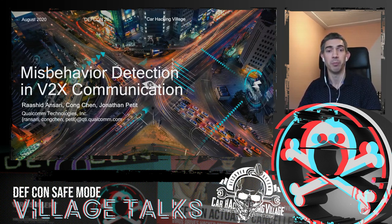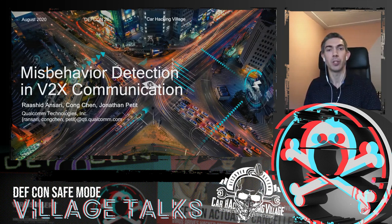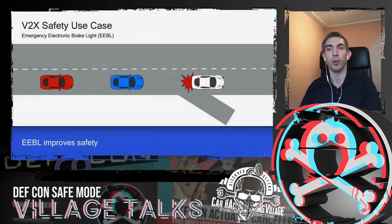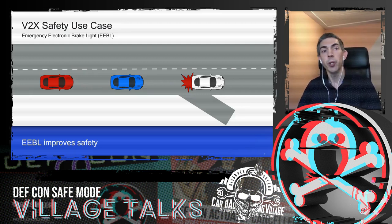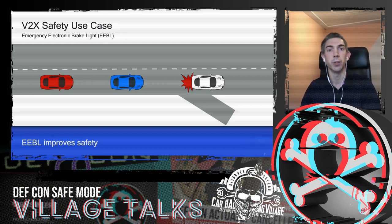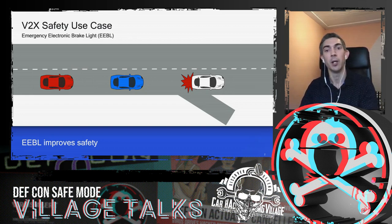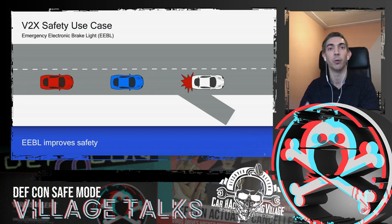Today we're going to talk about misbehavior detection and demonstrating some attacks on V2X onboard units. V2X enables devices like vehicles, pedestrians, or roadside units to be equipped with an onboard unit — a device that enables all those components to broadcast information to the surrounding area to create awareness.